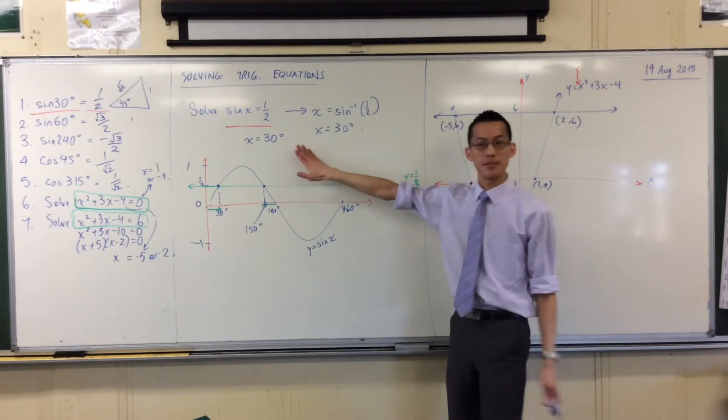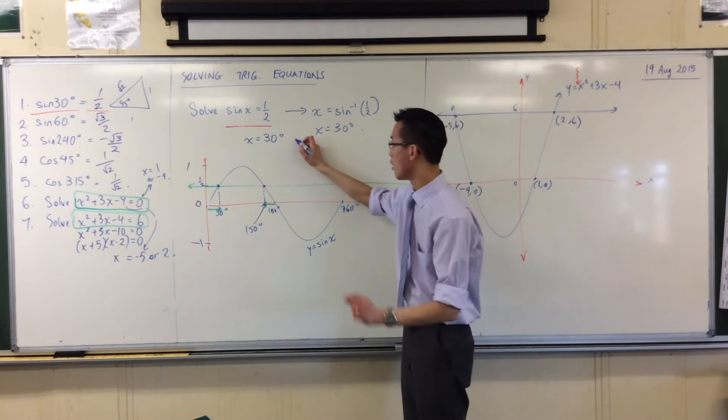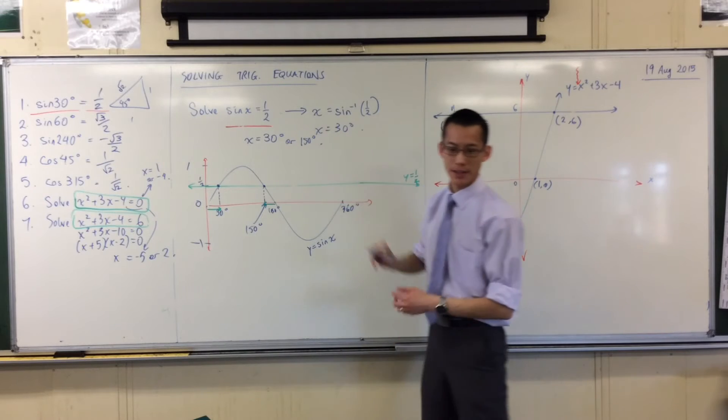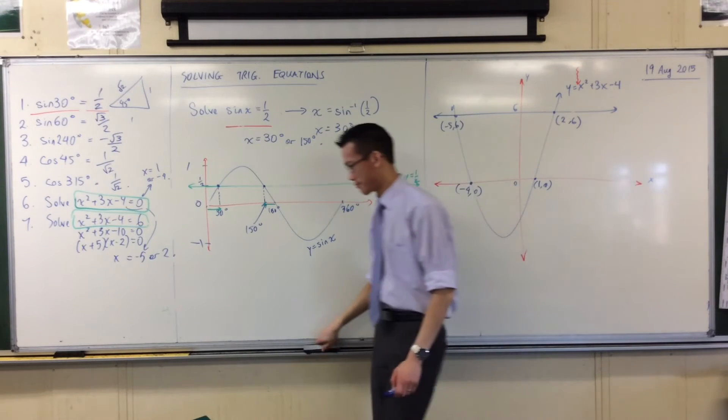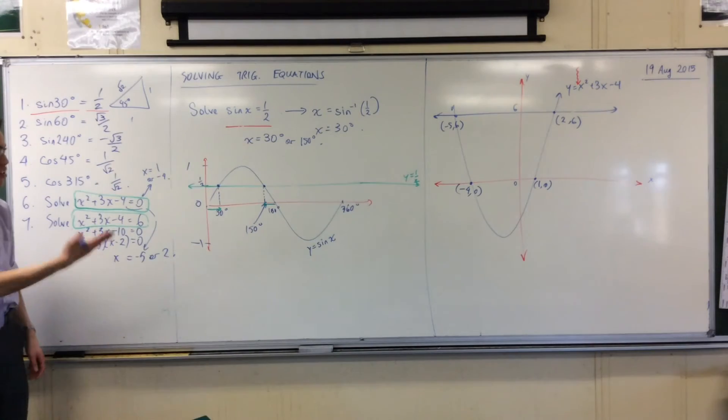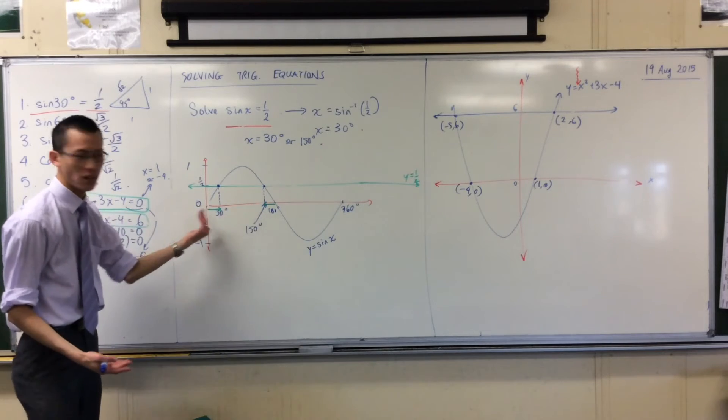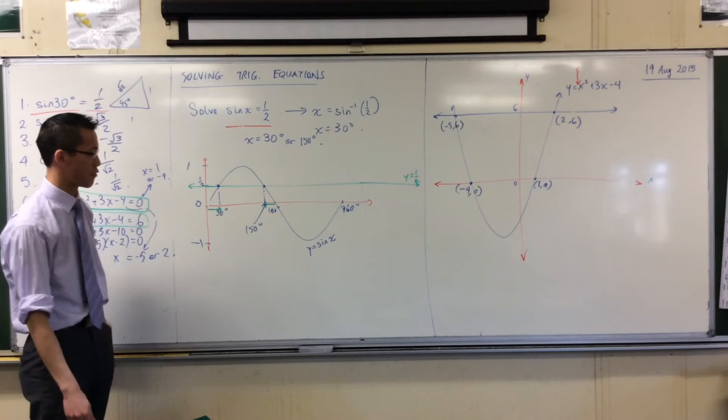So therefore, 30 degrees, not the only answer. Not the only answer. We should put up here as well, or 150 degrees. Now maybe at this point you're thinking, calculators, how unreliable. It's not fair. There's another answer. Why didn't it just tell us that answer? It can work it out. Calculators are smart. I'll show you why it doesn't tell you the other answer. It's very lazy, it tells you the first.